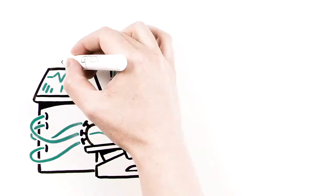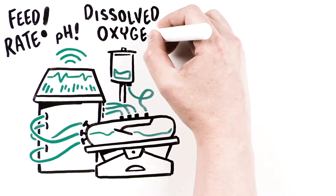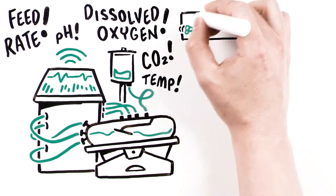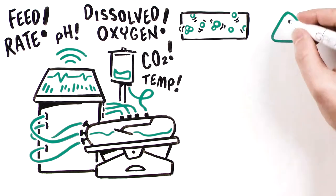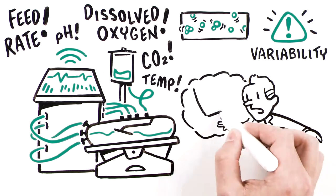Forced to control the machines, constant measurement of feed rate, pH, dissolved oxygen, CO2, and temperature is required. Overall, this level of complexity disturbs cells, adds variability, and requires expert operators throughout the process.